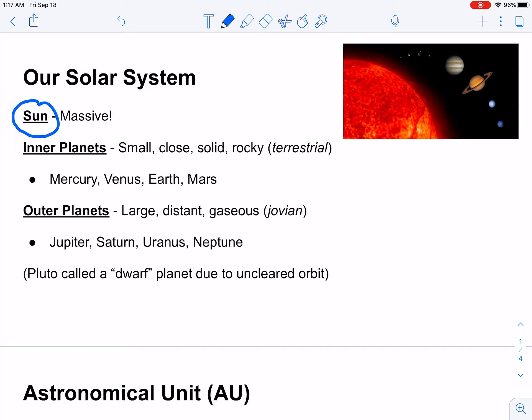The inner planets are Mercury, Venus, Earth, and Mars. They are all small, very close together, solid and rocky. They're usually referred to as terrestrial. You can see them all pictured right there. They also all have moons. They found evidence of life recently on Venus, which is pretty interesting.